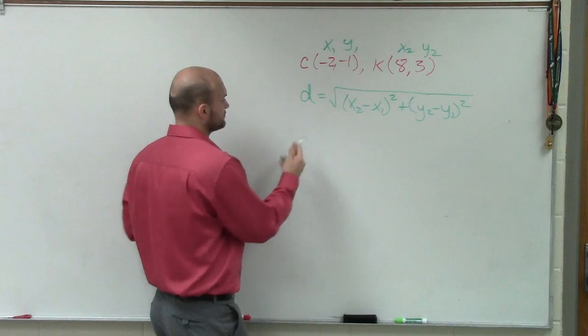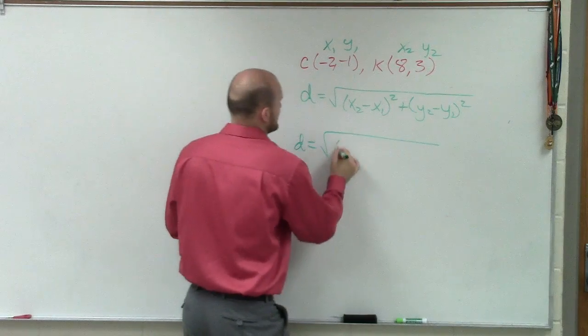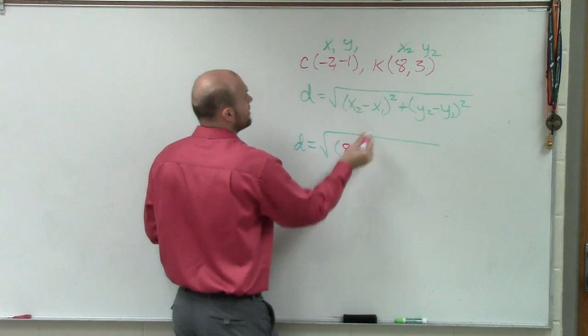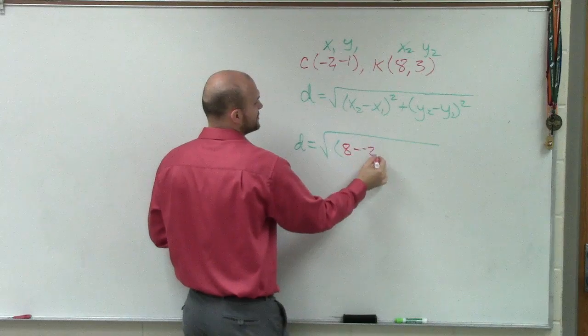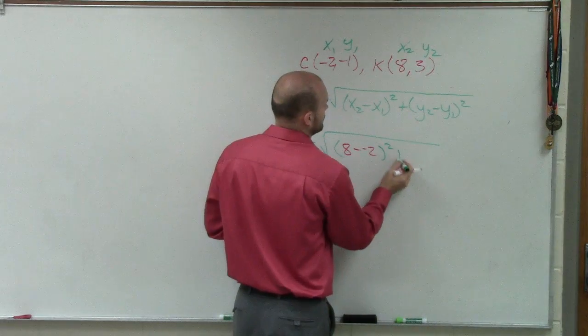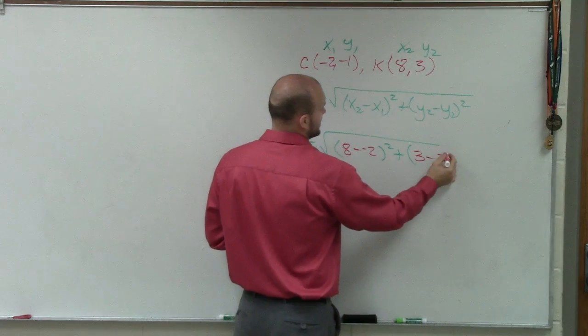So now to find the distance, I just take x2, which I notice x2 I wrote here is 8, minus x1, which is a negative 2, plus y2, which is a 3, minus a negative 1.